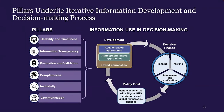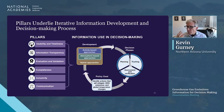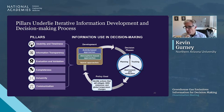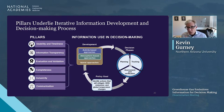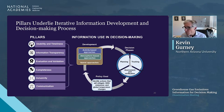Ideally the six pillars support a cycle where greenhouse gas information is developed, used in three phases of decision making — planning (what to mitigate, which sector, which fuel), tracking (monitoring a mitigation policy over time), and assessment or verification (did it meet its goals) — and then the learning feeds back into identifying further mitigation actions and refining the original greenhouse gas information used.